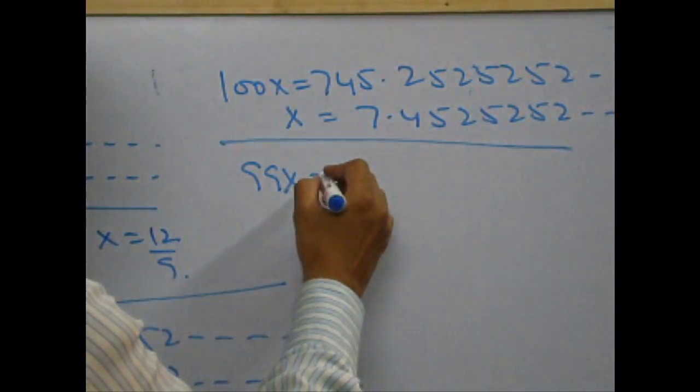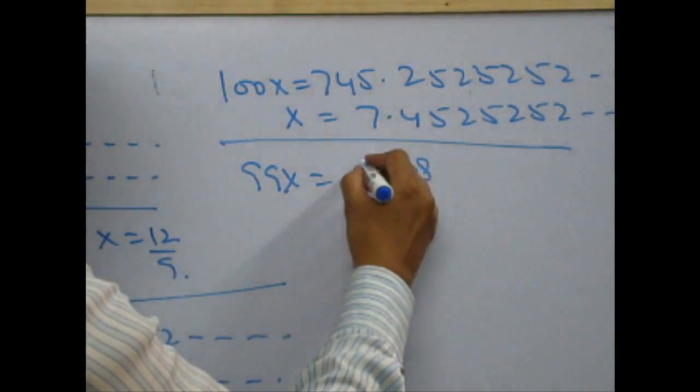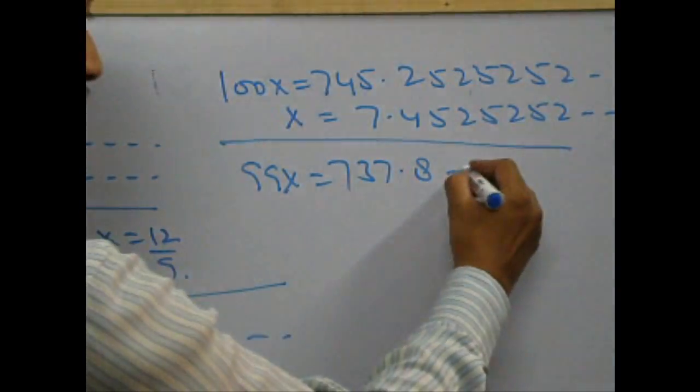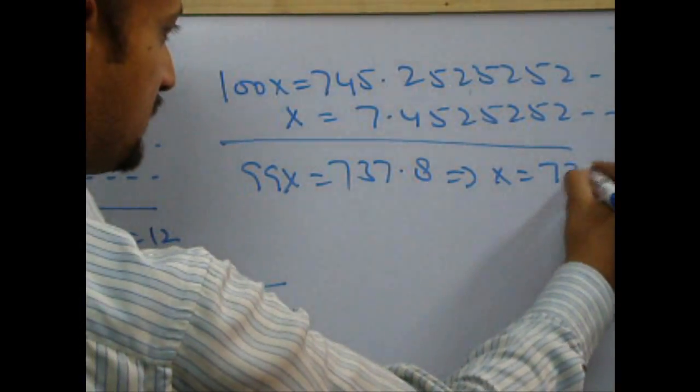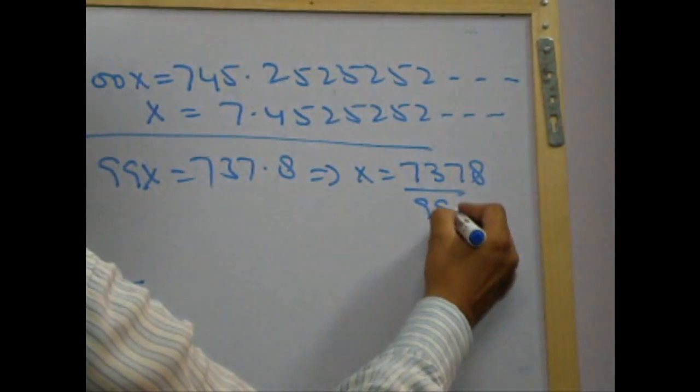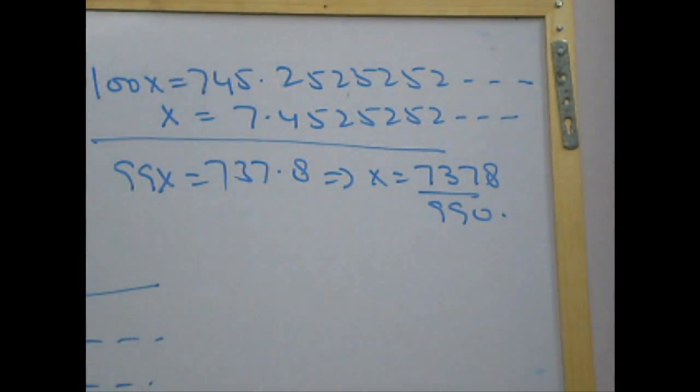On subtraction, I will be left with 737.8 and therefore, x is 7378 by 99. That's quite simple.